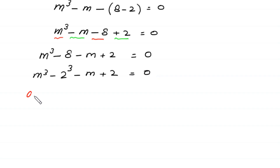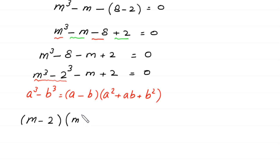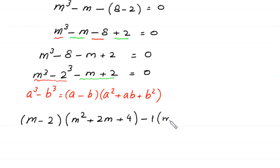Now, using the algebraic identity a cubed minus b cubed equals a minus b times a squared plus ab plus b squared, the expression m cubed minus 8, which is m cubed minus 2 cubed, can be factorized as m minus 2 times m squared plus 2m plus 4. From the terms negative m plus 2, we factor out negative 1, leaving negative 1 times m minus 2, equal to 0.